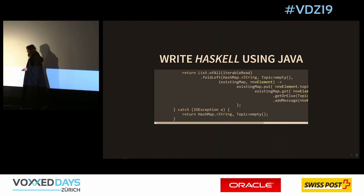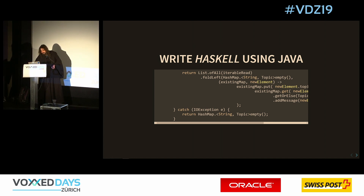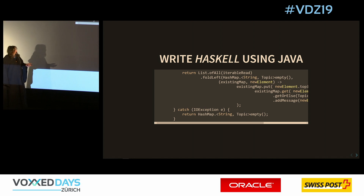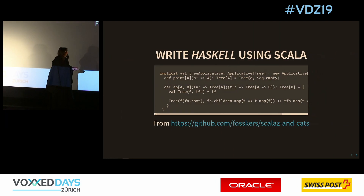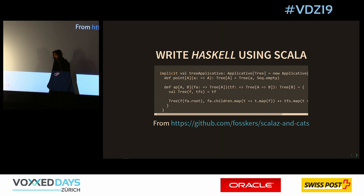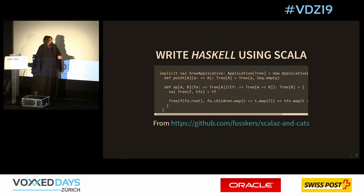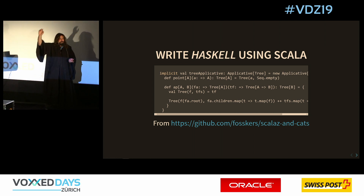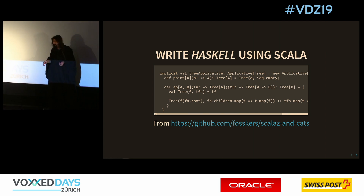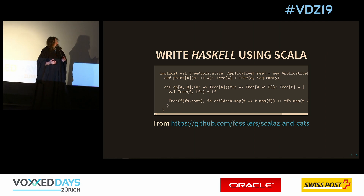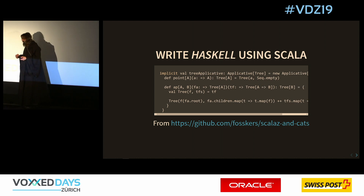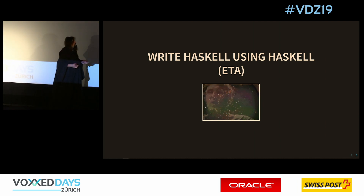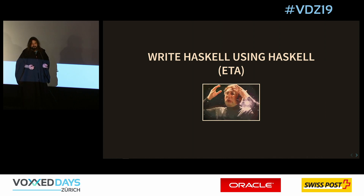One solution I was using for a long time was trying to write Haskell using Java. That looks beautiful especially if you are nested in flat maps for flat maps - it's not even pure from the Haskell perspective. Some smarter people tried using Scala to write Haskell-style code. This is actual code from someone I met at conferences. Haskell and Scala compete a little with each other, both have drawbacks and advantages, but it's still not exactly Haskell.